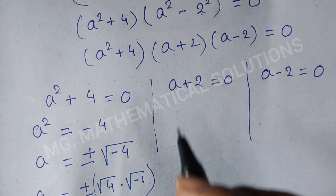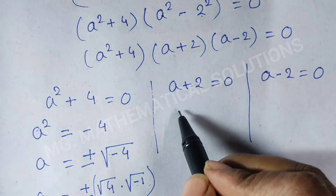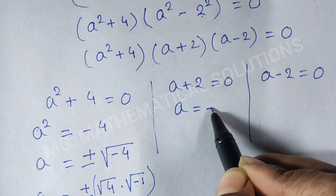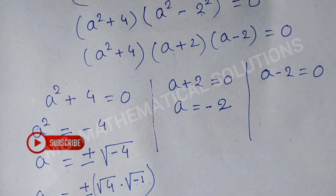Now we solve the second case. Here, a plus 2 equals 0, so a equals minus 2. And from the third factor, a minus 2 equals 0, giving a equals plus 2.